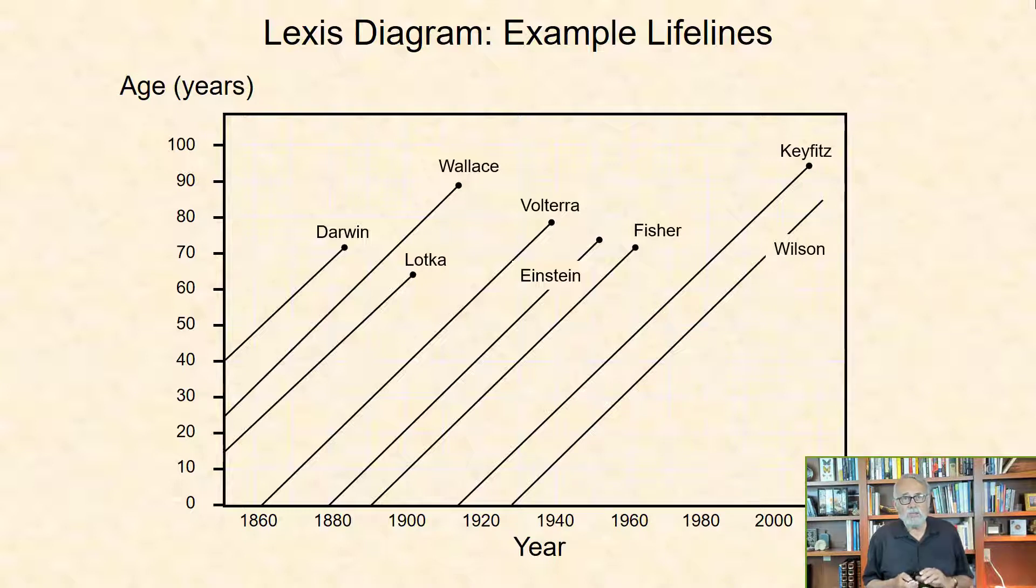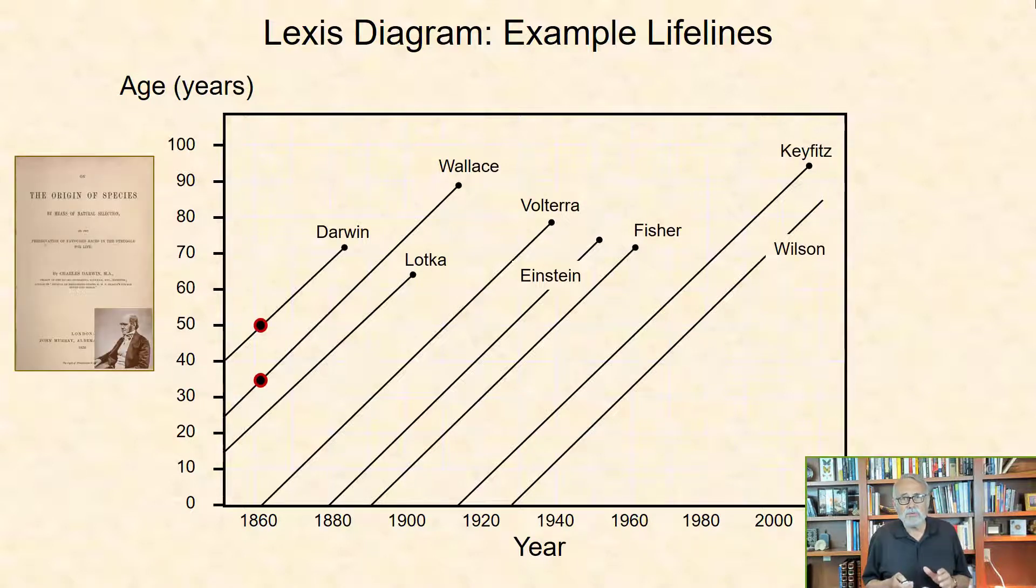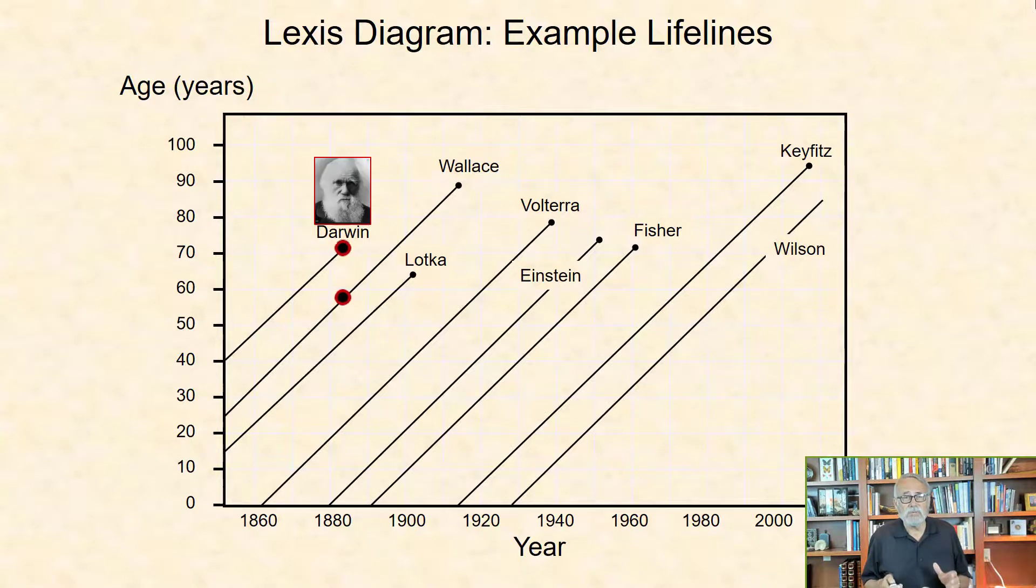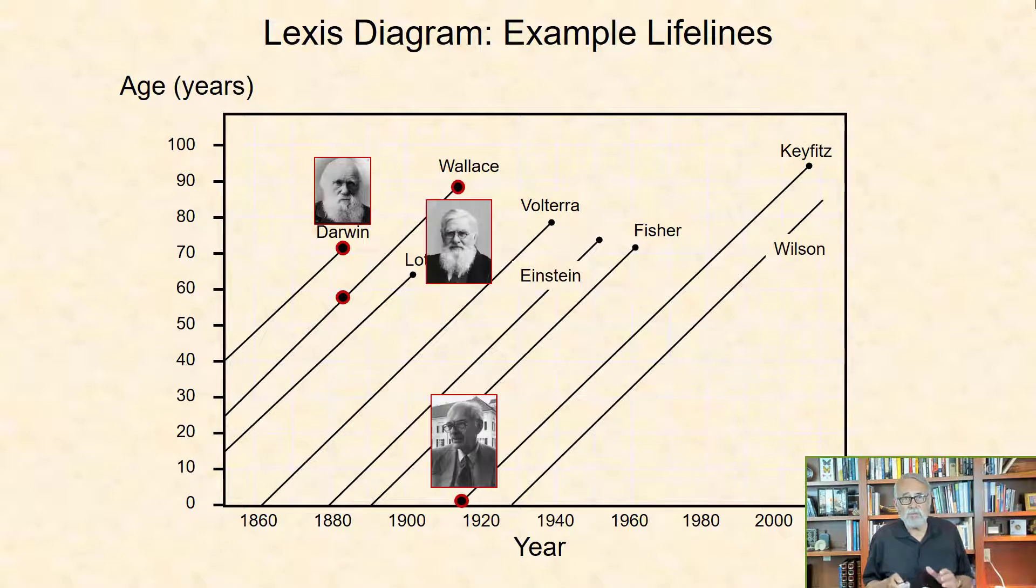The naturalist Alfred Wallace was a 36-year-old explorer in 1859 when the 50-year-old Darwin published his seminal On the Origin of Species, and he was a 59-year-old scholar in 1882 when, as pallbearer, he carried the casket of the 73-year-old newly deceased Charles Darwin. Wallace died in 1913 at age 90, the birth year of demographer Nathan Keyfitz.